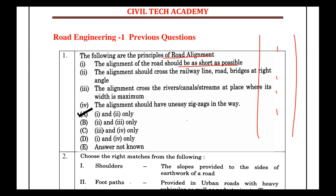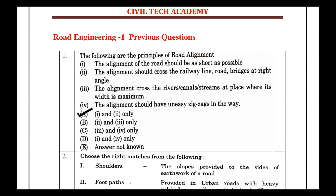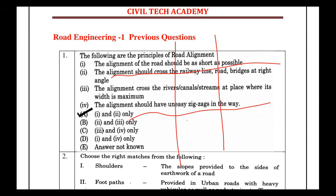Road alignment at railway lines and bridges should be at right angles. Similarly, the alignment across a river or canal — the crossing should be at right angles to the river or canal. The road crosses the river straight and at right angles for the maximum benefit.